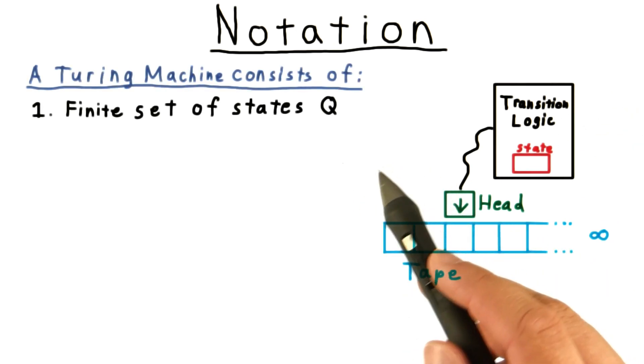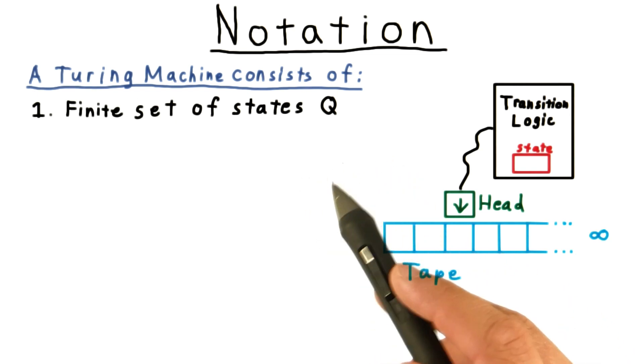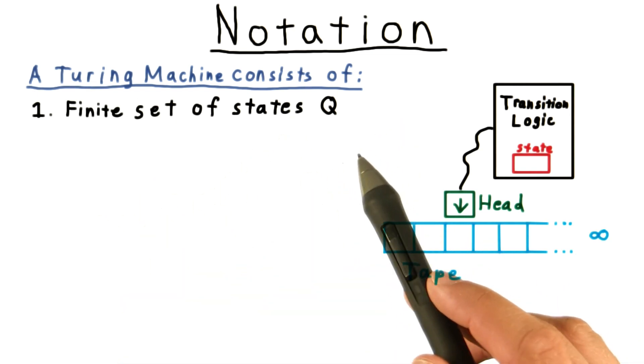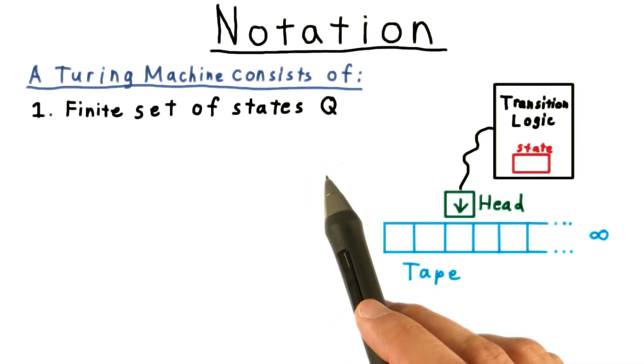Mathematically, a Turing machine consists of a finite set of states Q. Everything used to specify a Turing machine is finite, by the way. That's critically important.